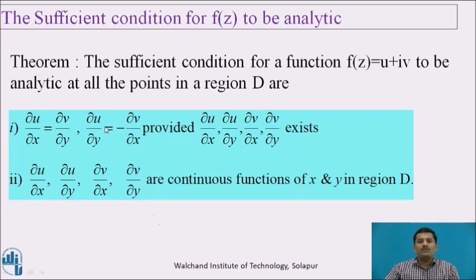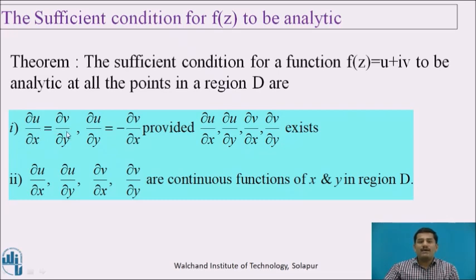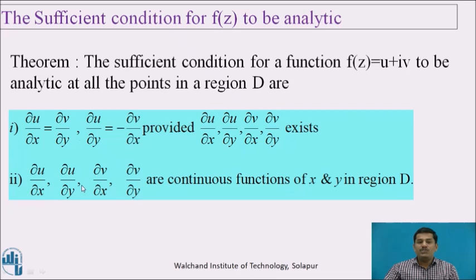What is the sufficient condition for f of z to be analytic? The sufficient conditions for a function f of z equal to u plus iv to be analytic at all points in a given region d are: first, u and v must satisfy the Cauchy-Riemann equations, provided all four partial derivatives exist; and second, all four partial derivatives must be continuous functions of x and y in the given region d. Functions which satisfy these two conditions are analytic.